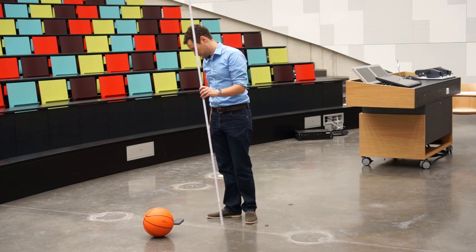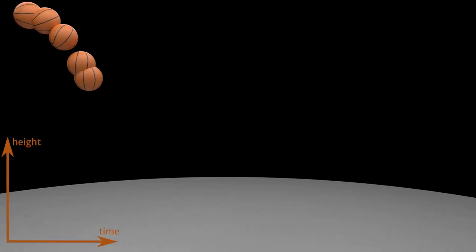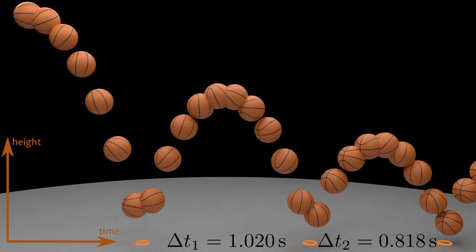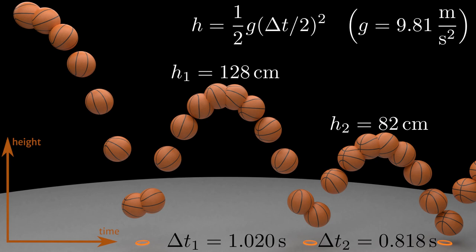So how does it work? We need the timing of 3 bounces. If we neglect air drag, we can assume free fall in between each bounce. From this we can calculate the maximum height between each bounce. Now that we have 2 heights, we can use their ratio to determine how much energy is lost on each bounce.